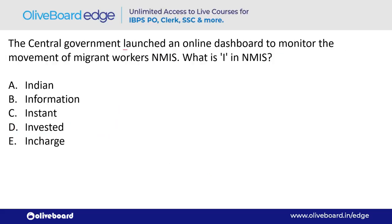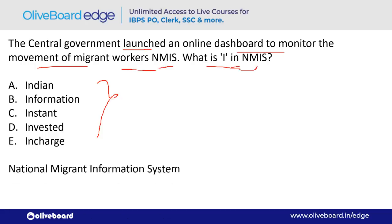The central government launched an online dashboard called NMIS to monitor the movement of migrant workers. What does 'I' stand for in NMIS? I stands for Information — option B. NMIS stands for National Migrant Information System.